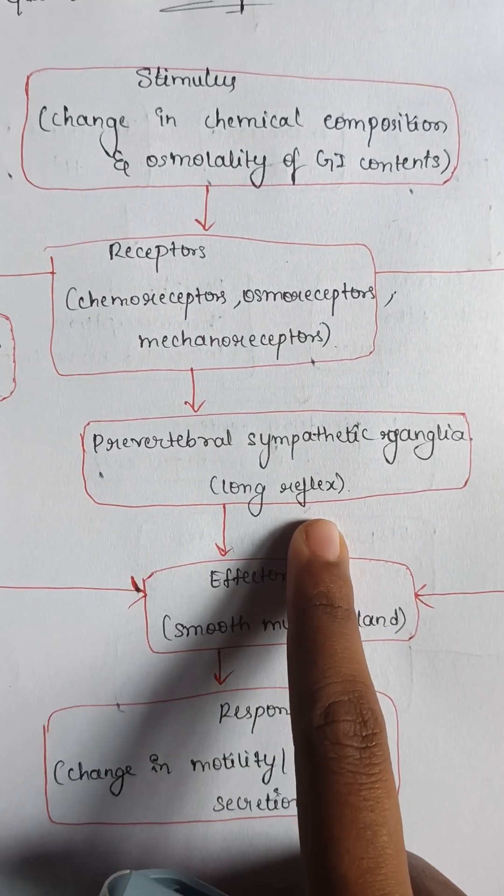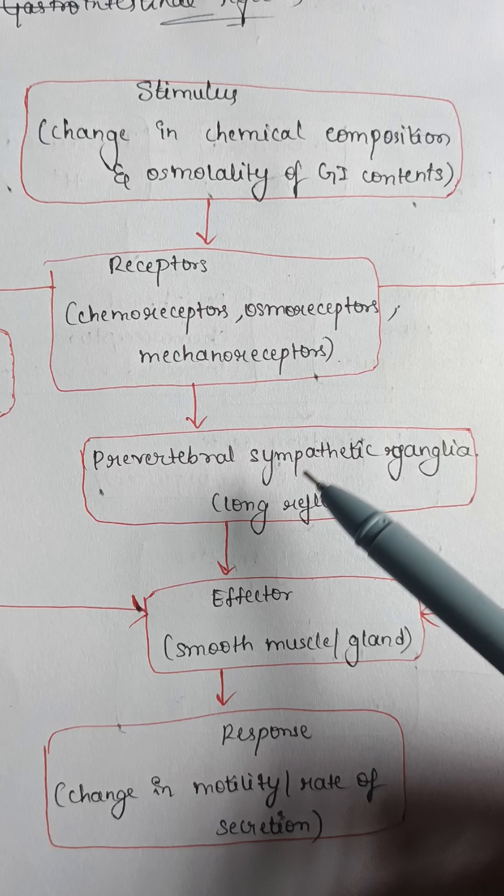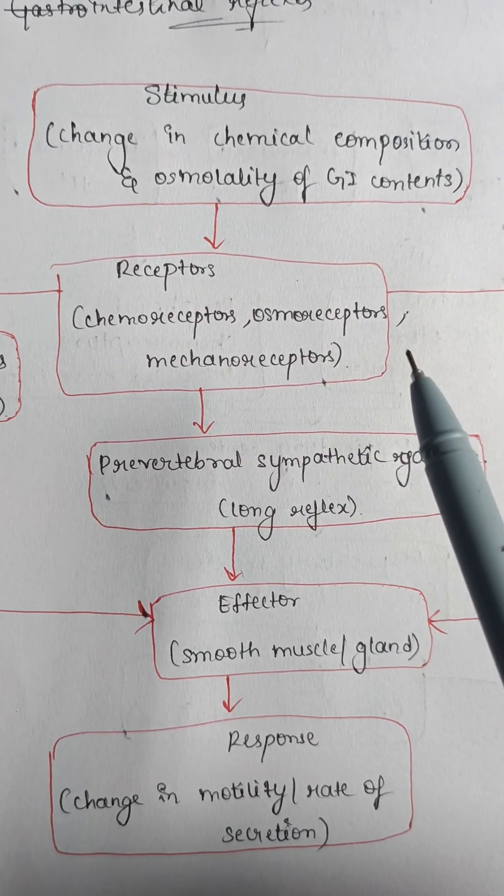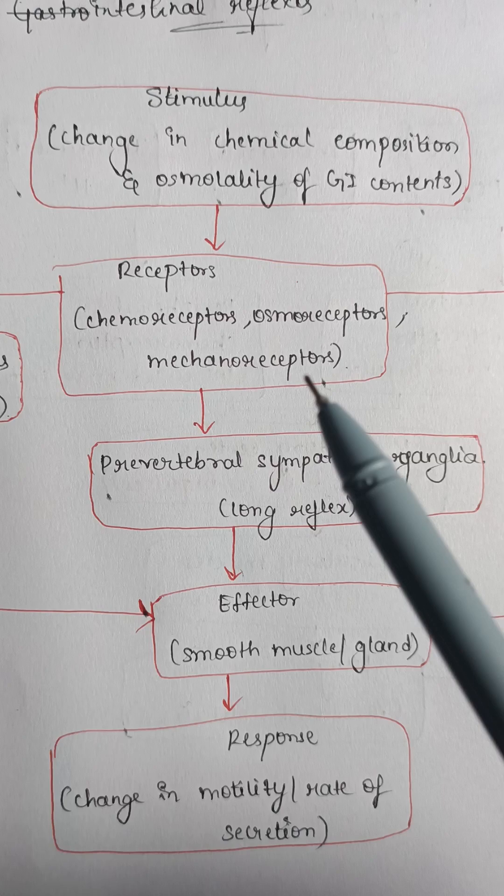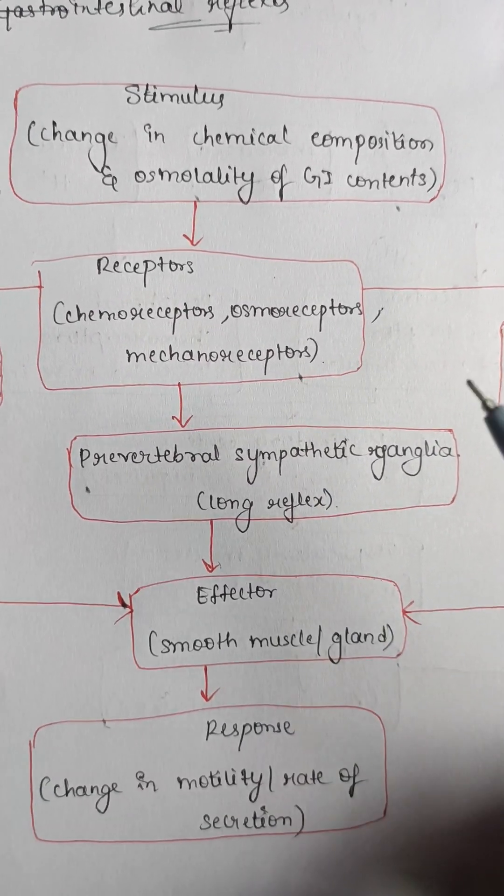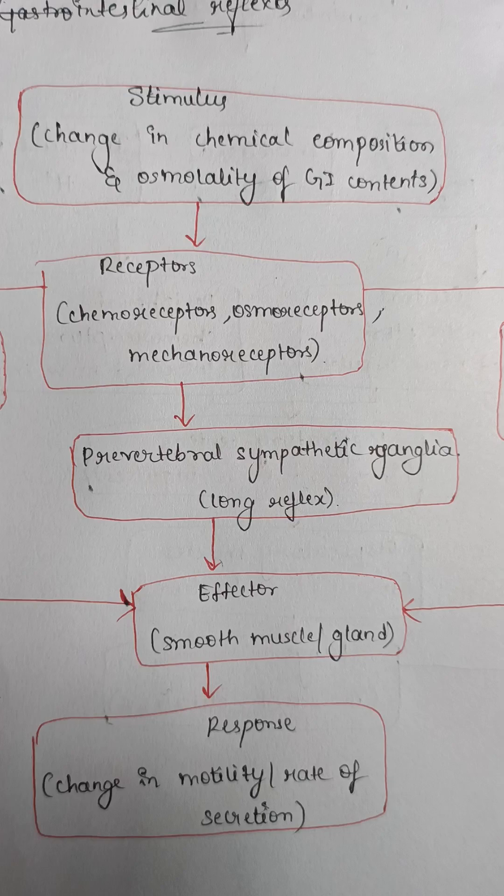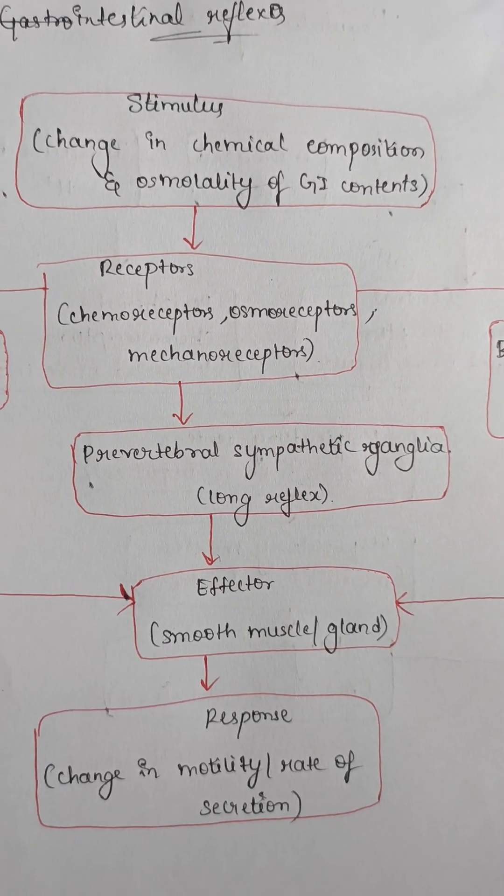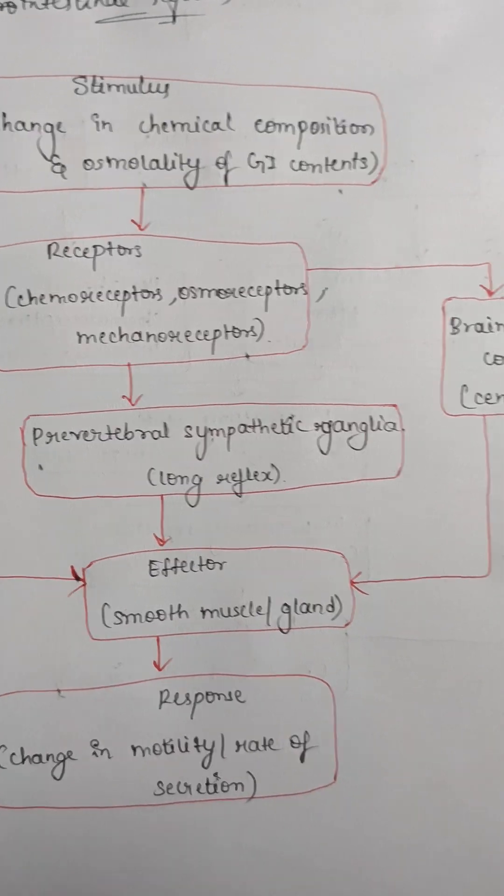Next we will see long reflex. These carry signals for long distances in the GI system. This reflex usually travels from GIT to the prevertebral sympathetic ganglion and back. An example is gastrocolic reflex, in which signals from the stomach cause evacuation of the colon.